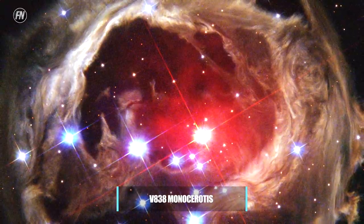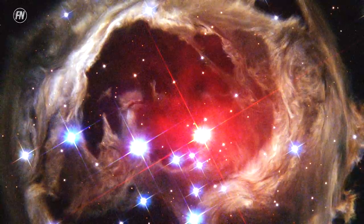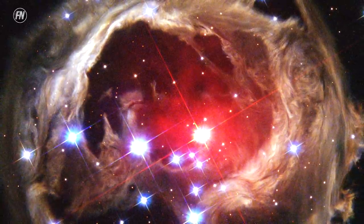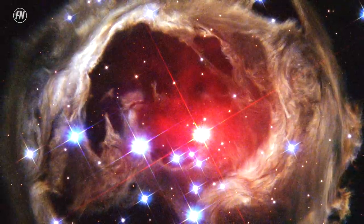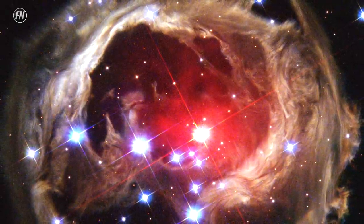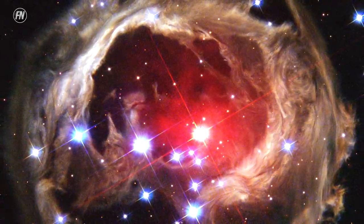V838 Monocerotis. The Hubble was able to capture the expanding light echo from the supergiant star V838 Monocerotis over the course of several years, showing how the billowing spirals of dust were thrust through trillions of miles of interstellar space as the force of the star propelled the dull clouds.